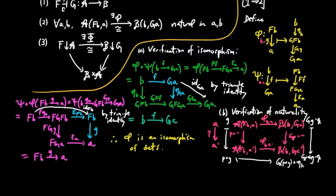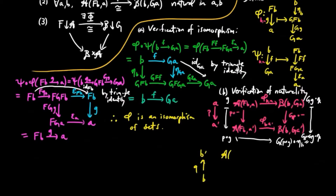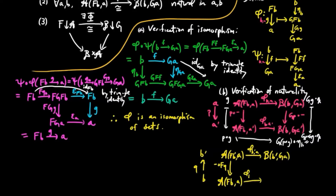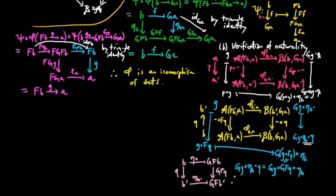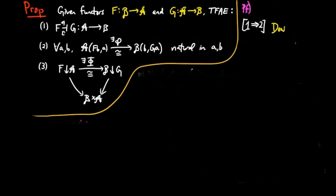For naturality in B, we need to show that for a B-morphism Q, the following diagram commutes, where the left map is pre-composition by FQ and the right map is pre-composition by Q. Taking G along the high road gives us G ∘ G ∘ eta_B ∘ Q, and the low road gives G ∘ G ∘ F(Q) ∘ eta_B. By naturality of the unit eta, we can make the following substitution which shows equality. Therefore, phi is natural in A and B, so 1 implies 2 is done.